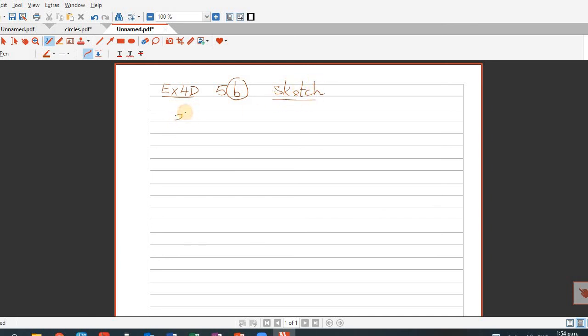Let me write the question. The question is sketch x squared plus y squared plus 4x minus 6y minus 3 is equal to 0.